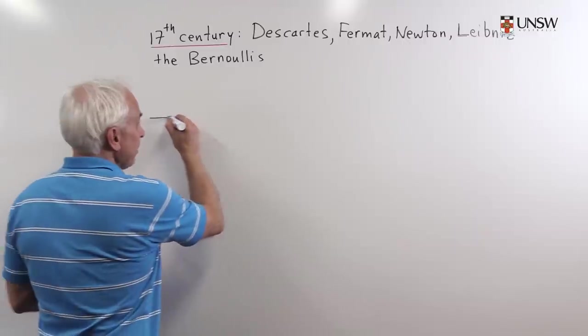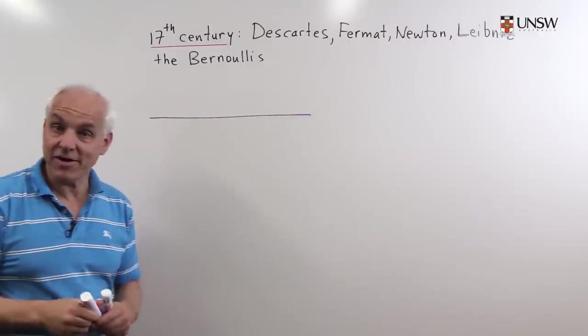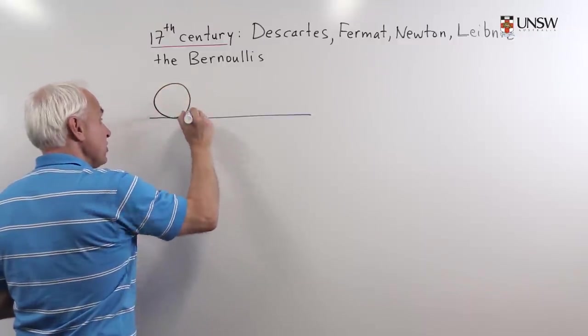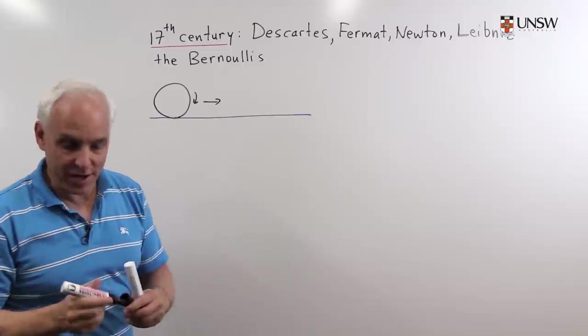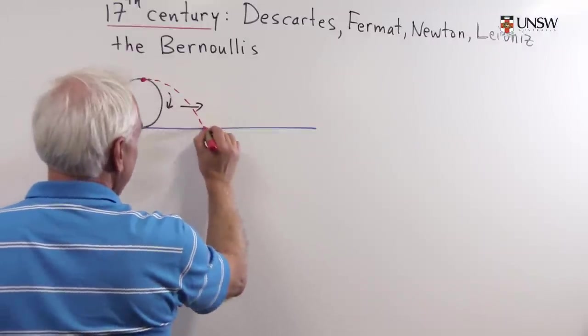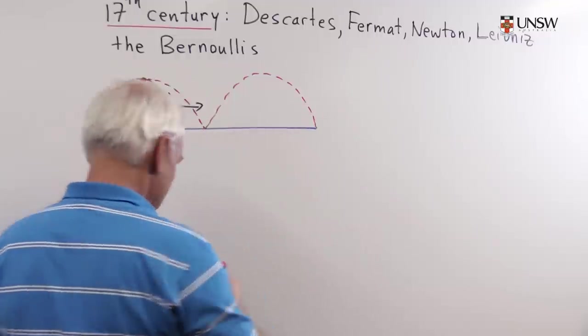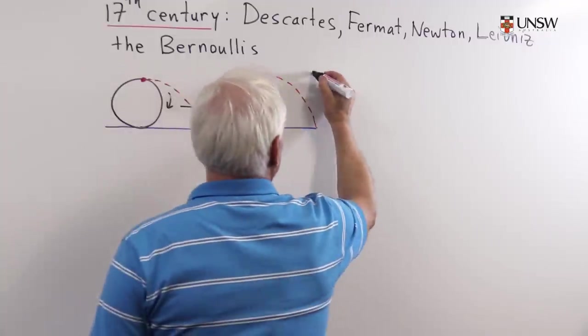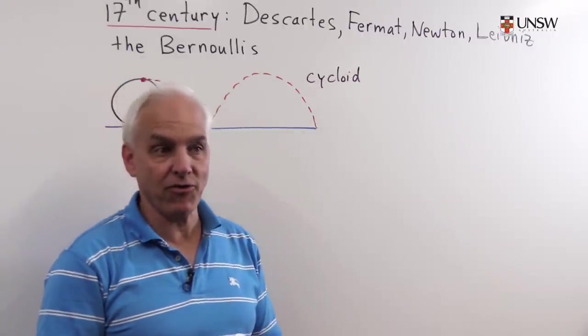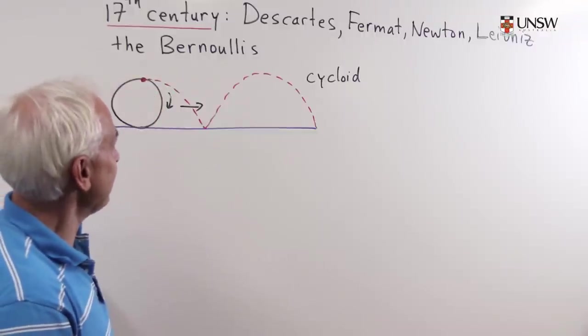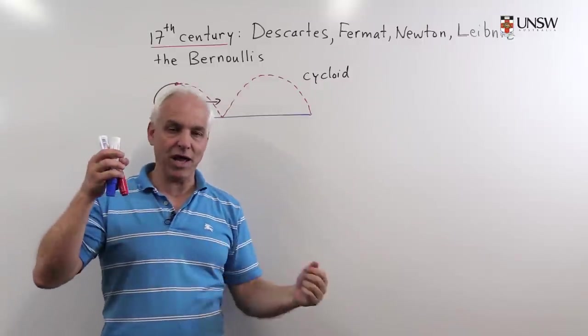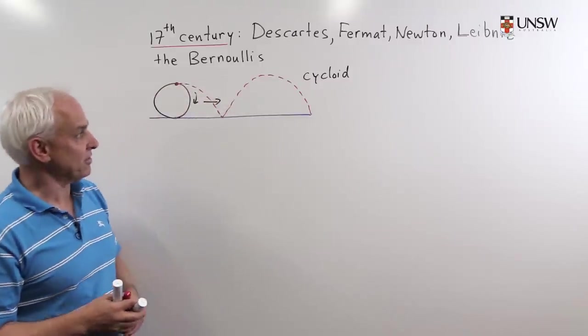One curve that was particularly interesting was a very close analog to the epicycle of Ptolemy, where you take a circle and this time you just roll it on a straight line. And then if you follow a point on it then that point will make a curve called a cycloid. And this was a very important curve that figured prominently in several key problems in the 17th and 18th century. In particular how to find a curve where you can roll a ball from one height to another down in the fastest way. That turns out to be an inverted cycloid.